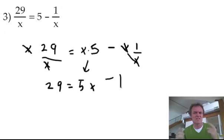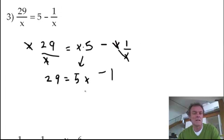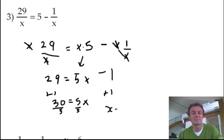The only thing now that's got an x is the 5x. Everything else is cancelled. So I'm going to add a 1 to both sides. So that's 30. So 5x equals 30. Divide both sides by 5. x equals 6. And that's it. Pretty straightforward.